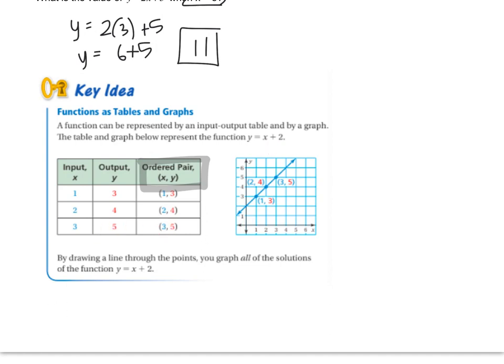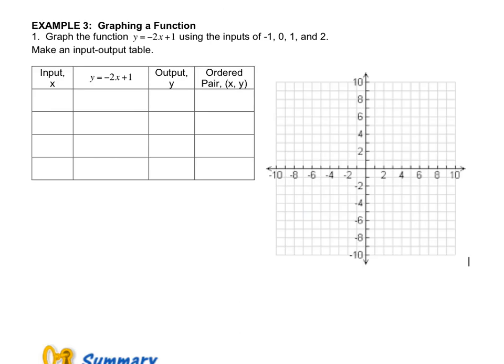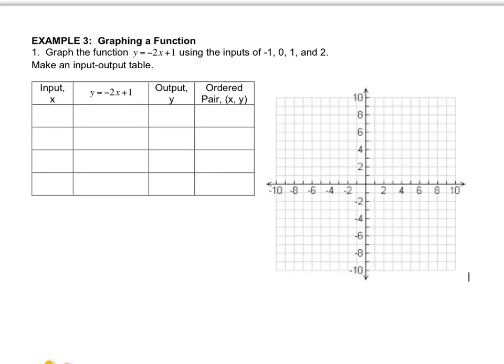Now for this function Y = -2X + 1, they tell us which X values to use. We have to use these X values in our table. So let's fill them in together: negative one, zero, one, two.